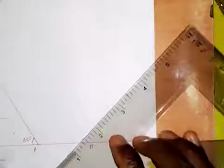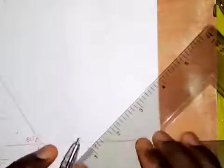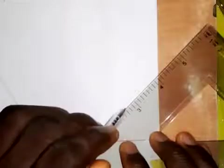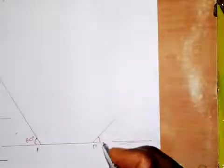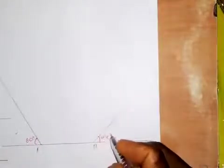I will take my 60-degree set square and set it at point A, drawing a line in this direction. The angle here is 60 degrees. I will also take my 45-degree set square and set it at point B, drawing a line in this direction. This angle here is 45 degrees.